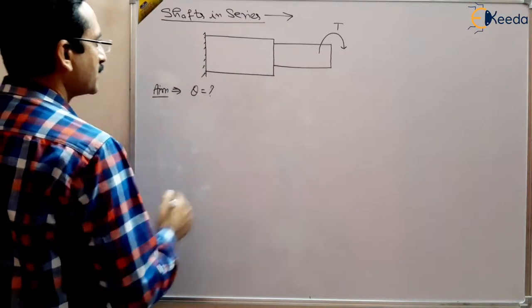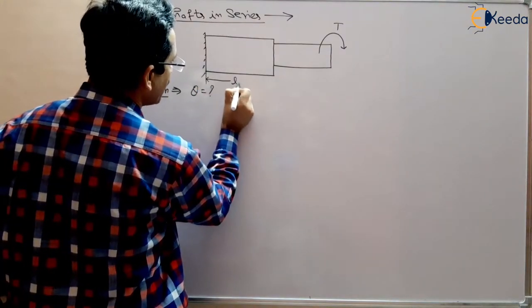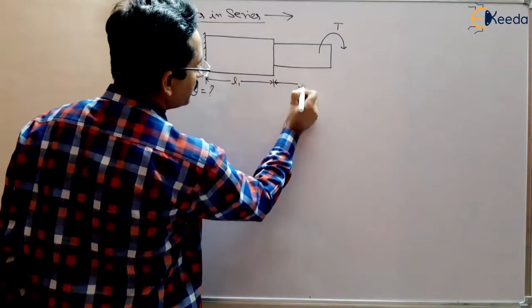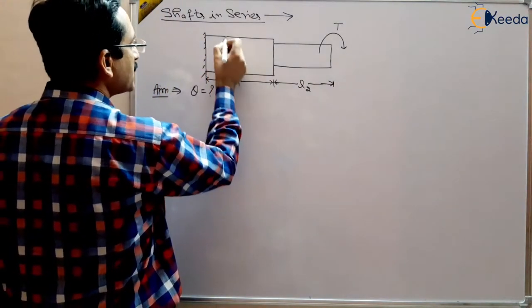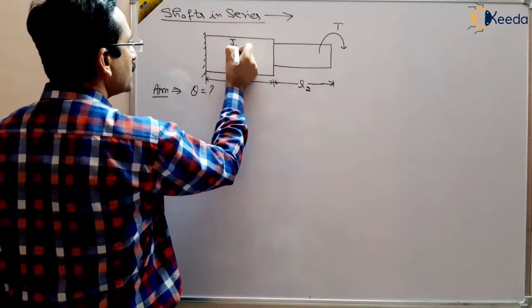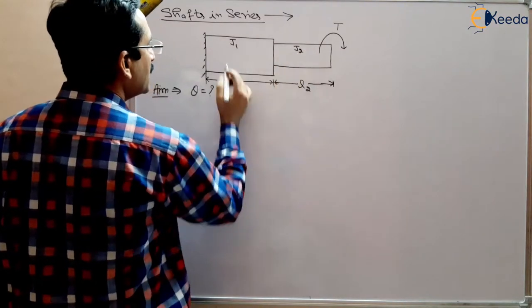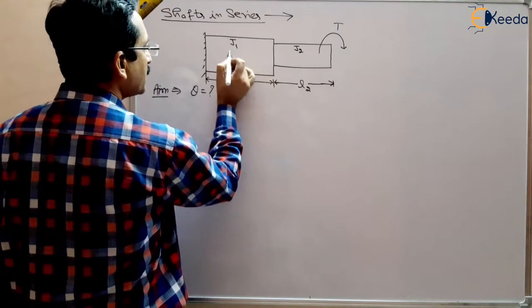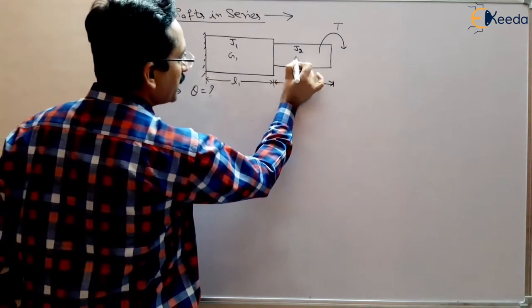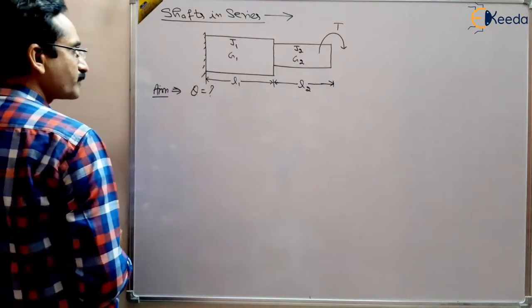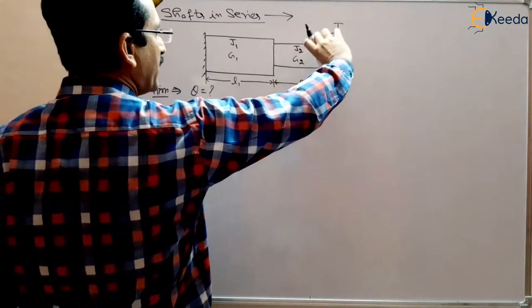Our aim is to find out the angle of twist of this shaft. The shafts may have different lengths — the length of this shaft is L1 and the length of this shaft is L2. Each shaft has a different diameter, giving it a different polar moment of inertia J. This shaft may also have a different material and therefore a different modulus of rigidity G. So we have to find the total angle of twist when a torque is applied.